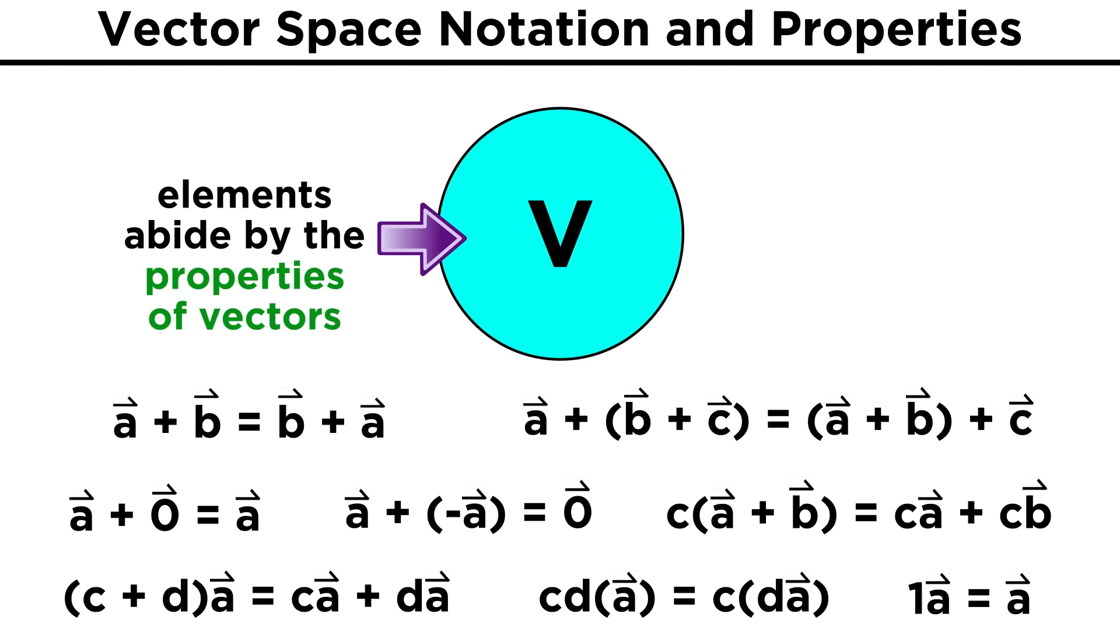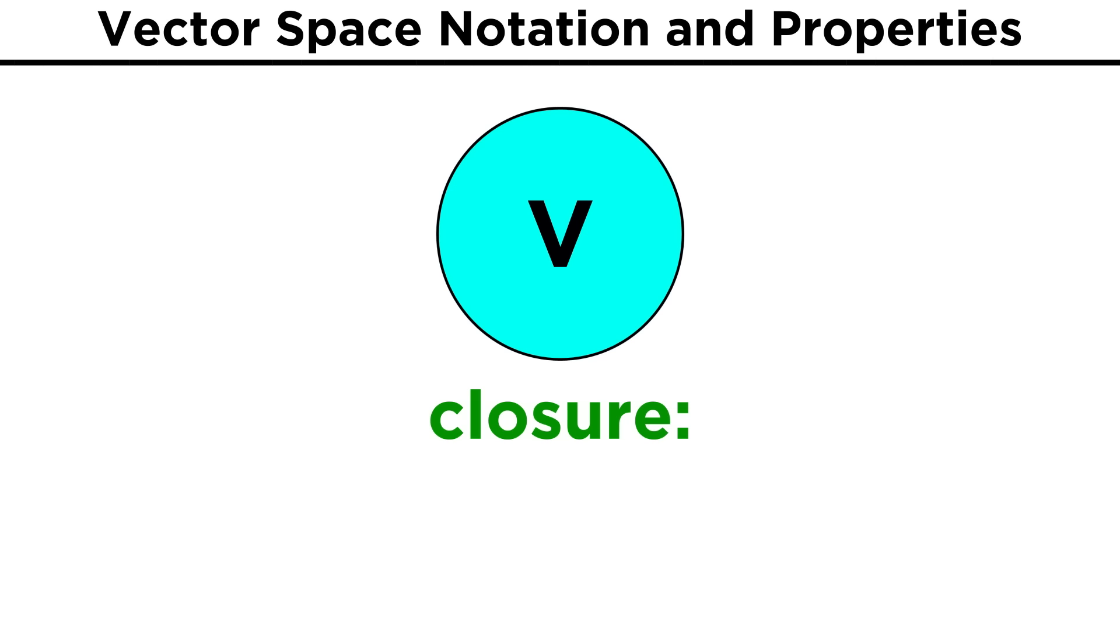So these are simply properties that elements of the vector space must possess. And in this way, we can regard a vector space as a collection of elements that can be added together in any combination and multiplied by scalars in any combination.